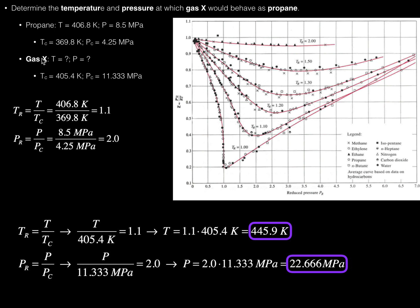If we want gas X to have a reduced temperature of 1.1, then we set the reduced temperature equal to 1.1. So 1.1 has to equal the temperature divided by the critical temperature, which is 405.4 Kelvin. From here we just solve for the temperature: T = 1.1 × 405.4 Kelvin, which gives a temperature of 445.9 Kelvin.